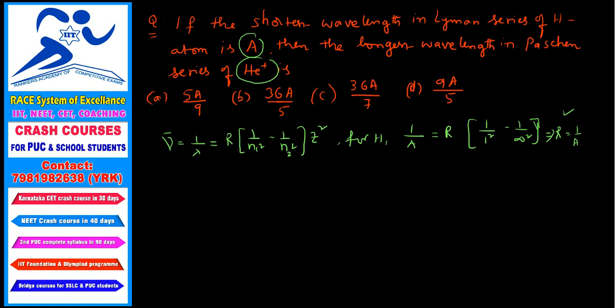Come into the helium case. For helium plus if you take Z value is 2. In that case what will happen? 1 by lambda of helium will become equals to R into, see longest wavelength is the next N2 value only. So N1 value is 1 means N2 value is 2. But for Paschen series N1 value is 3, so longest wavelength the N2 value will become 4.